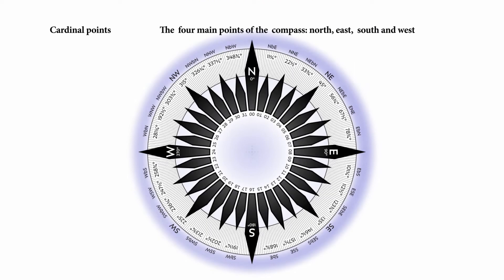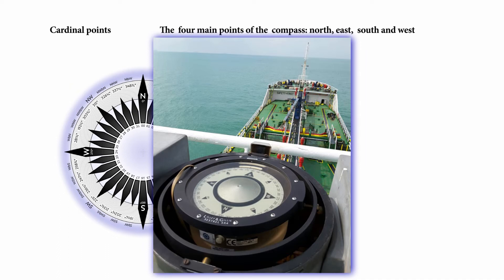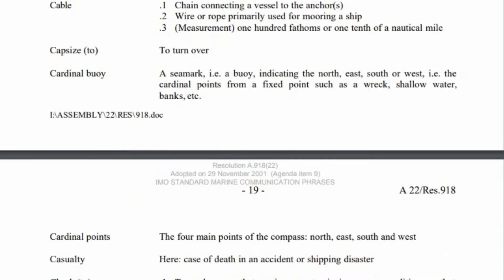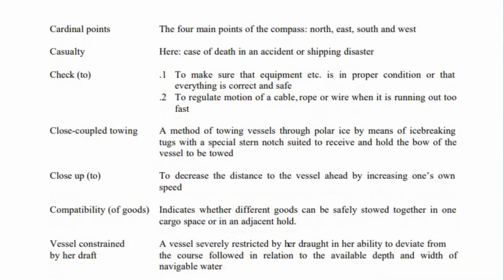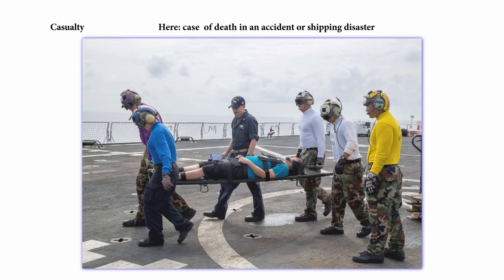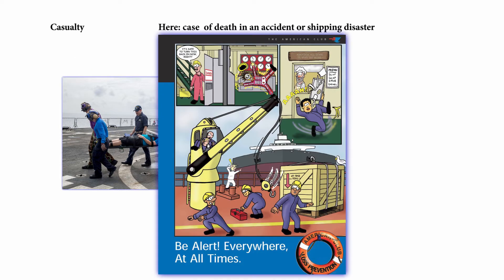Cardinal points: these are the four main points of the compass - north, east, south, and west. Casualty: here it is a case of death in an accident or shipping disaster.